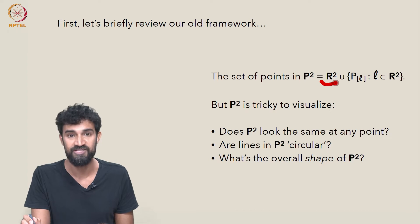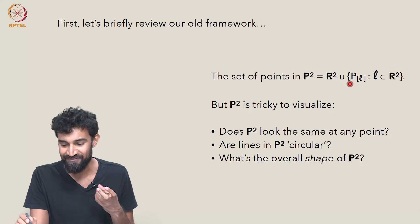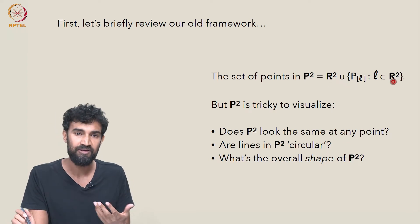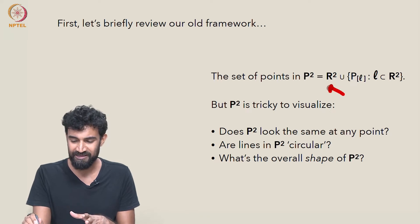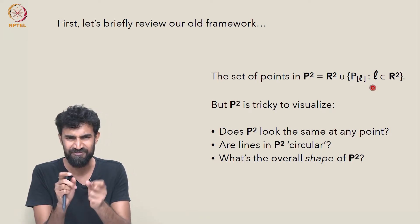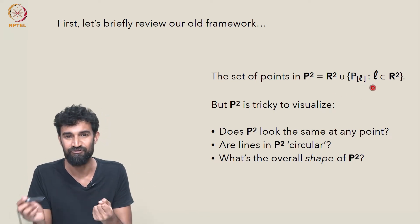which are not that easy to answer from this formulation, are just whether P² does it look the same at every point? From this formulation, it looks like we have our ordinary points coming from R².